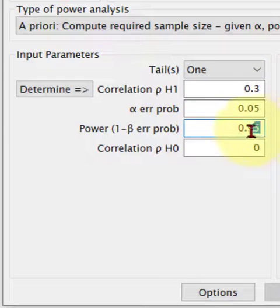And 0.05, like always, and change it to 0.8. And the correlation of the null hypothesis is zero, right? The null hypothesis is there is no correlation.